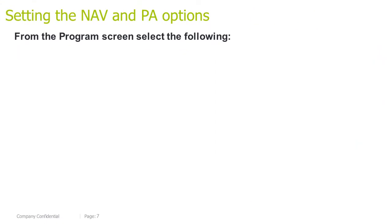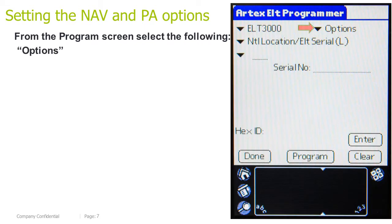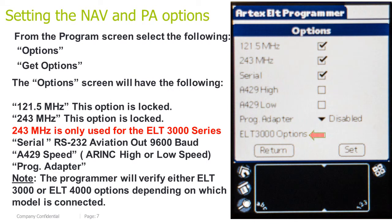Setting the NAV and PA options: from the programming screen, select Options > Get Options. The options screen will have the following. 121.5 MHz — this option is locked. 243 MHz — this option is locked. 243 MHz is only used for the ELT 3000 series and this box will not be checked for the ELT 4000. Serial: RS-232, aviation out at 9600 baud. ARINC 429 speed: this can be either high or low speed, and it cannot be both. Programming adapter: this is either enabled or disabled. Note: the programmer will verify either ELT 3000 or ELT 4000 options depending on the model connected.